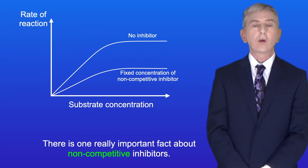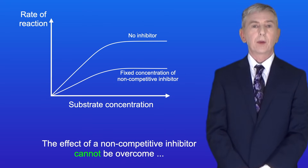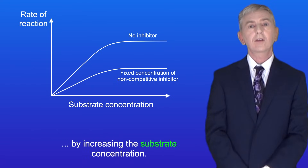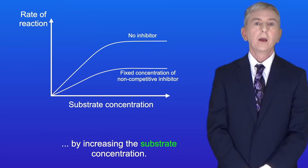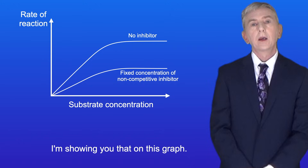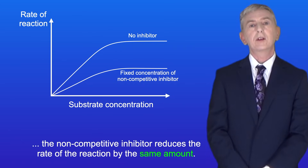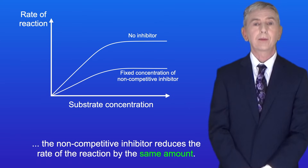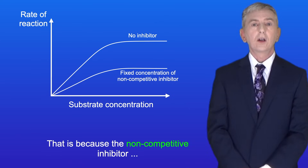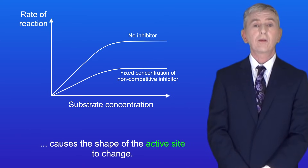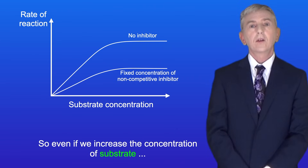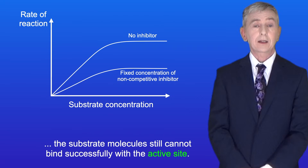Now there is one really important fact about non-competitive inhibitors: the effect of a non-competitive inhibitor cannot be overcome by increasing the substrate concentration. I'm showing you that on this graph. Even if we increase the substrate concentration, the non-competitive inhibitor reduces the rate of the reaction by the same amount. That's because the non-competitive inhibitor causes the shape of the active site to change, so even if we increase the concentration of substrate, the substrate molecules still cannot bind successfully with the active site.